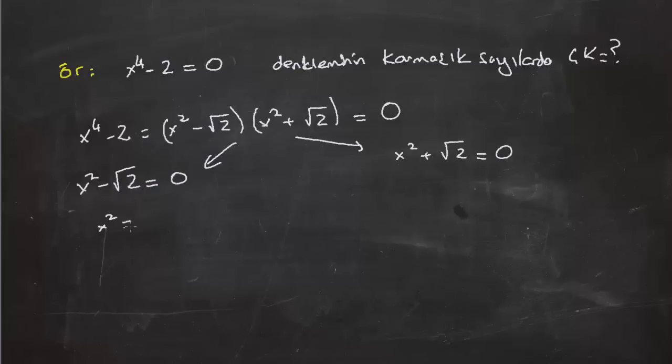Şimdi x² - √2 = 0 demek x² = √2 eşit demek. Bu da x = ±√√2, yani bu da ±⁴√2 ediyor. Şimdi burada iki tane real çözüm bulmuş olduk.